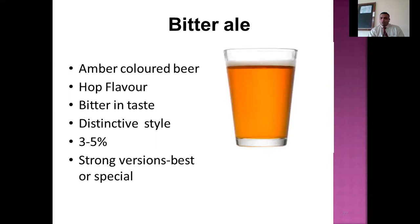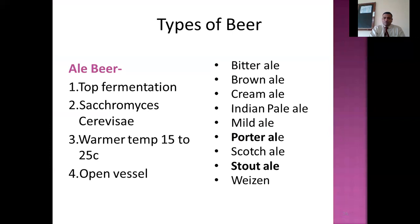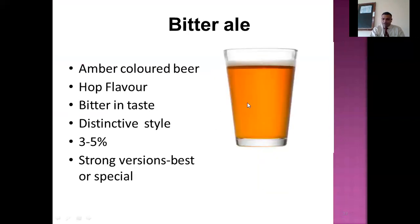First is bitter ale — amber colored beer. Amber is a golden color, as you can see in the beer. It uses hops from the humulus family, a kind of plant that gives a good floral flavor to the drink. It has a very nice hoppy flavor and is bitter in taste. It has a very low alcohol content of three to five percent, but it is considered a stronger version. When guests ask for the best, bartenders often offer the bitter ale.